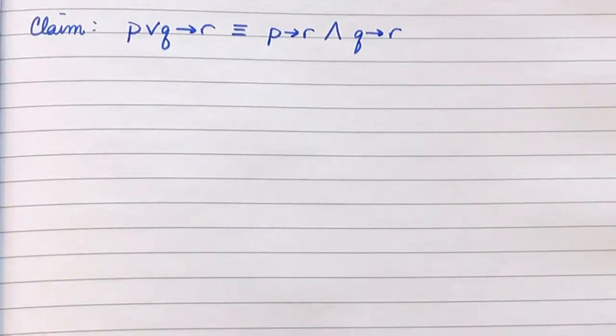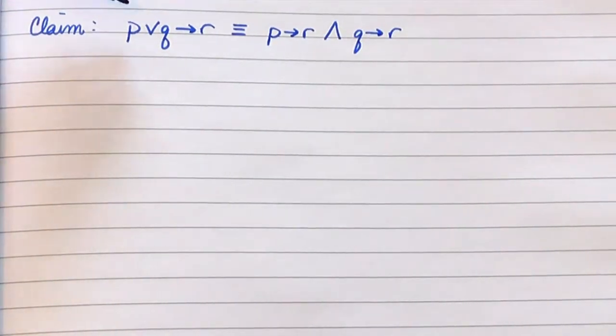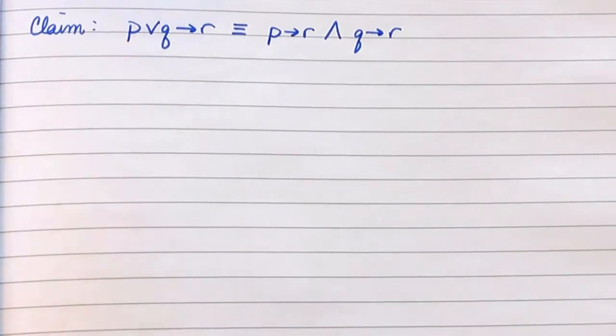I am going to begin by proving that these two statement forms are equivalent. Here we have if P or Q is true, then R is true.